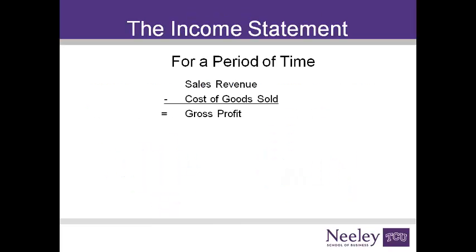The income statement begins with sales revenue and subtracts cost of goods sold to get gross profit. Gross profit is profit earned from selling inventory. Operating income is determined after subtracting operating expenses. Administrative, selling, and research and development are typical operating expenses.